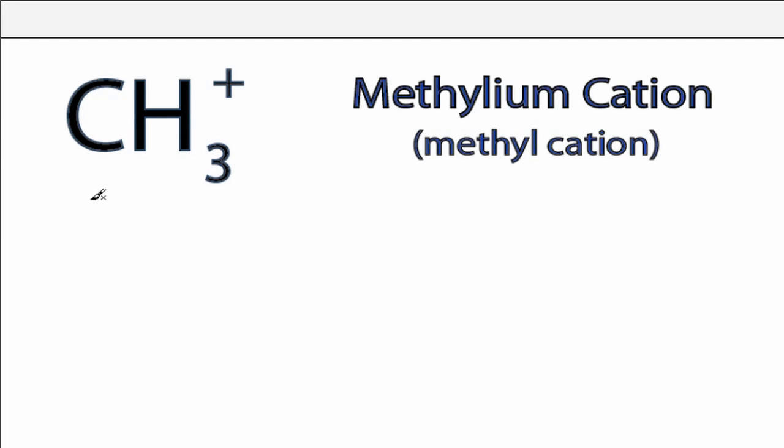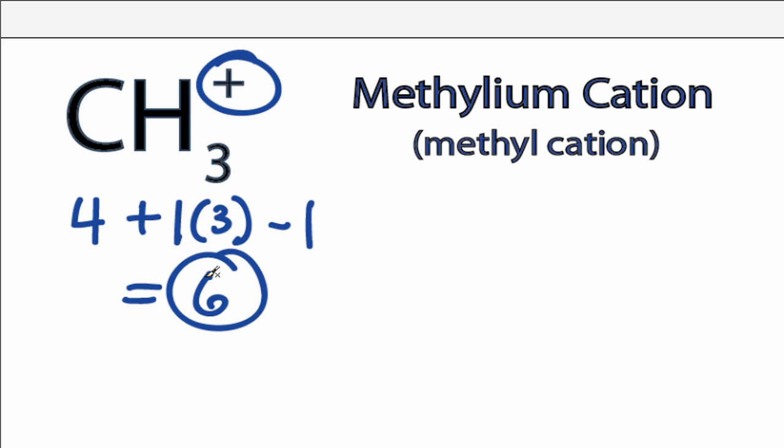For the CH3+ Lewis structure, we have four valence electrons for carbon. We have one for hydrogen, but we have three hydrogens. The plus sign means we've lost a valence electron. So we have a total of six valence electrons for CH3+, the methylium cation.